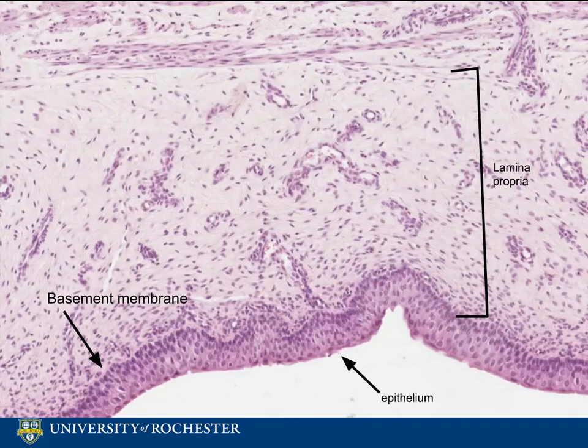The basement membrane is what separates the epithelium from the connective tissue that it lies on, called the lamina propria. The lamina propria and the urothelium together make up the mucosa.